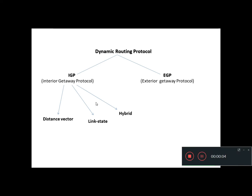In networking, there are two types of dynamic routing protocols. Dynamic routing protocols automatically select the best path to reach all networks. There are two types: Interior Gateway Protocol (IGP) and Exterior Gateway Protocol (EGP). Here we are learning about Interior Gateway Protocol, which has three types: distance vector routing protocol, link state routing protocol, and hybrid routing protocol.